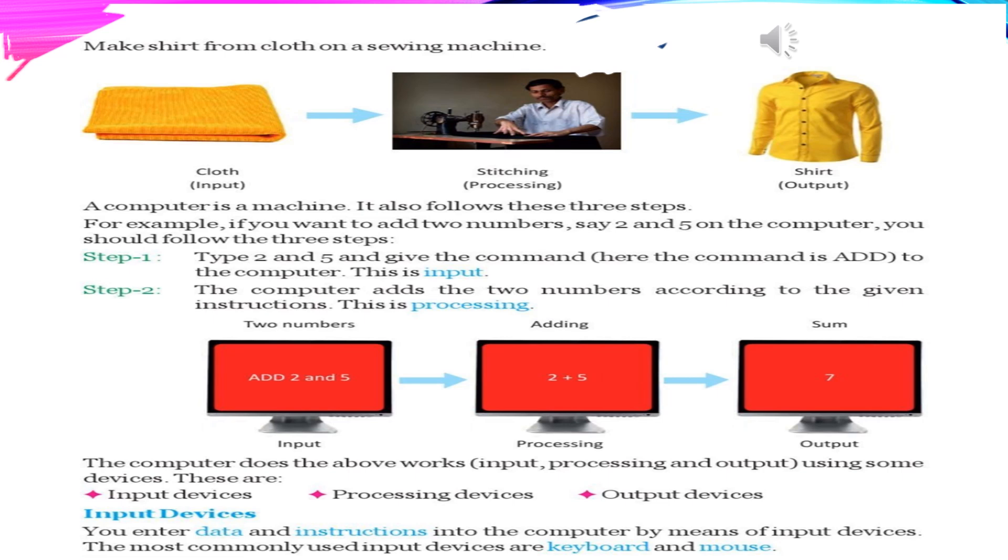Step 1: Type 2 and 5 and give the command, here the command is ADD to the computer. This is input. Step 2: The computer adds the two numbers according to the given instructions. This is processing.